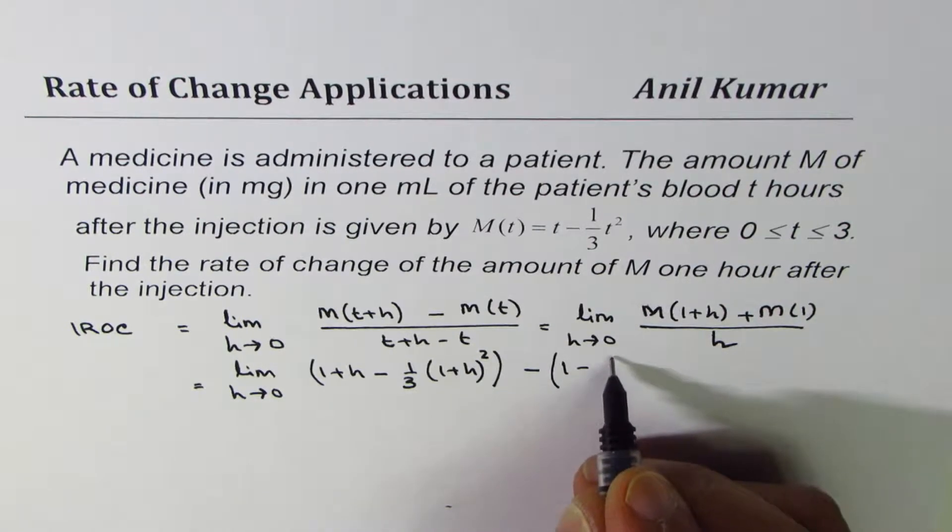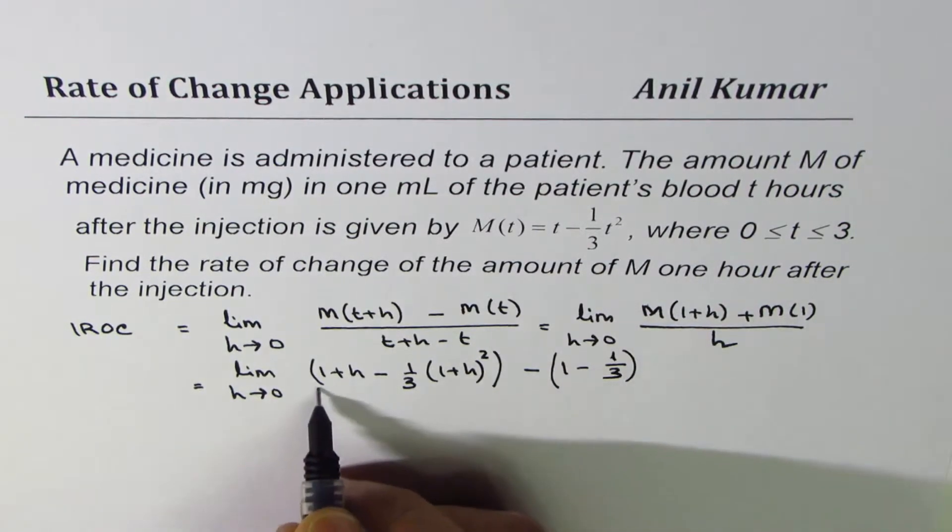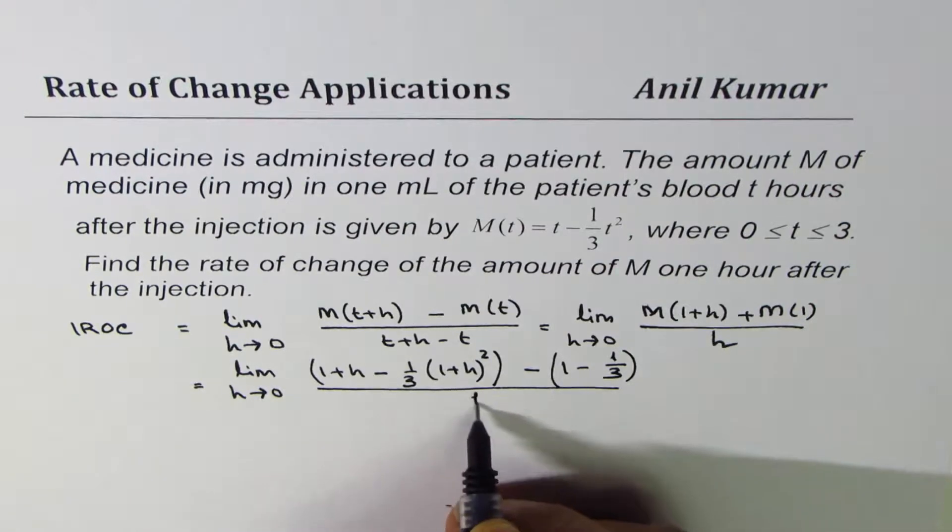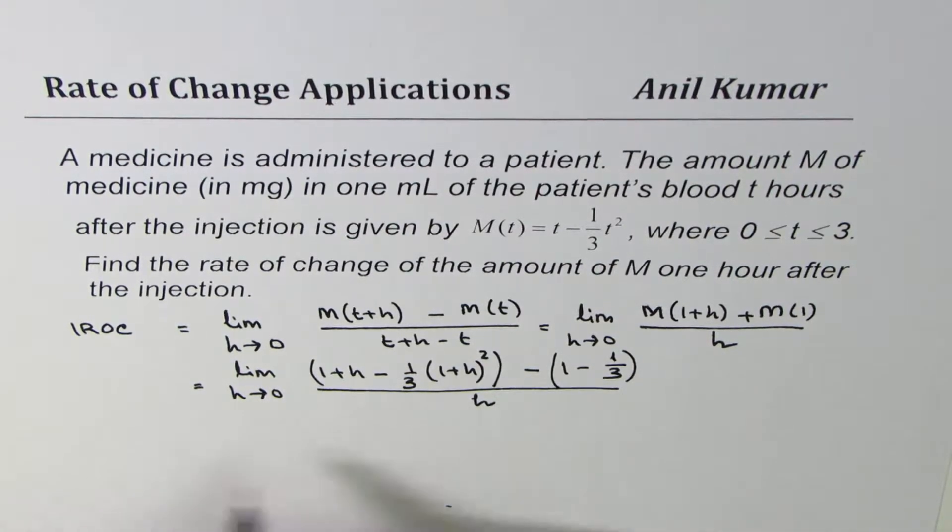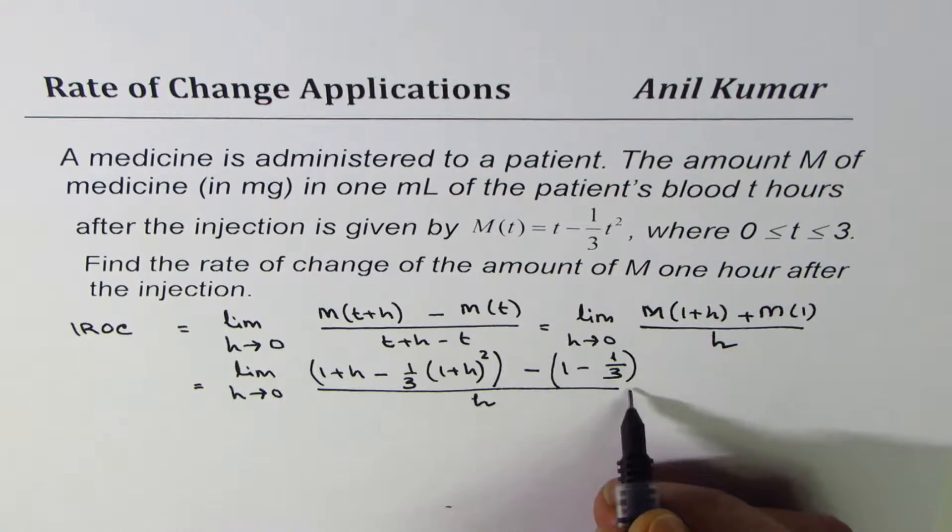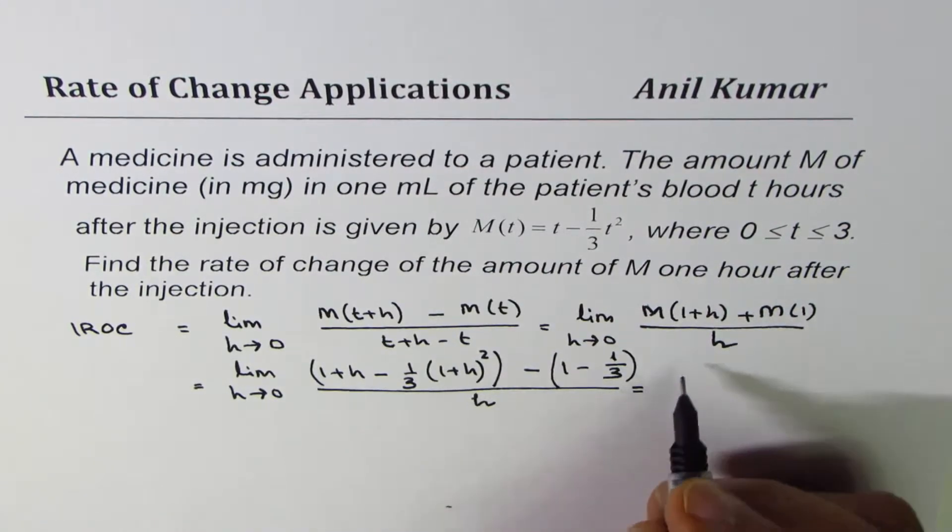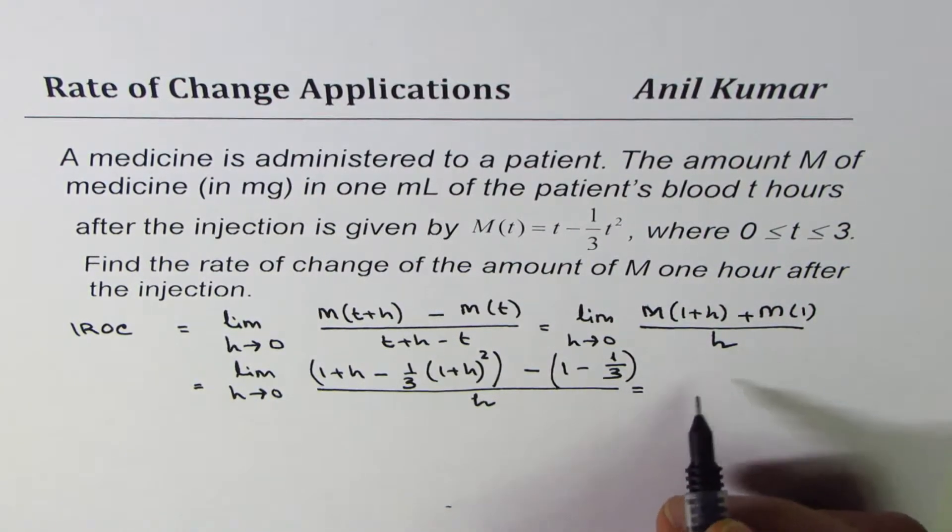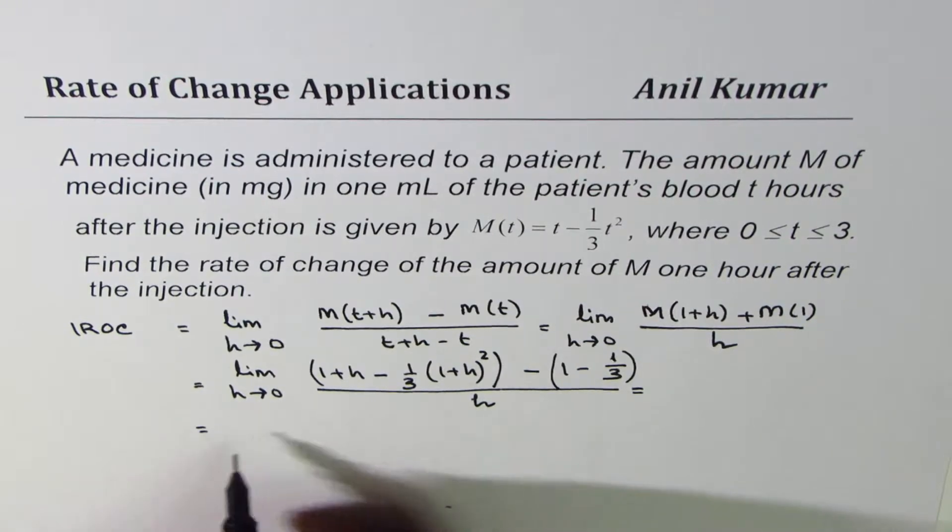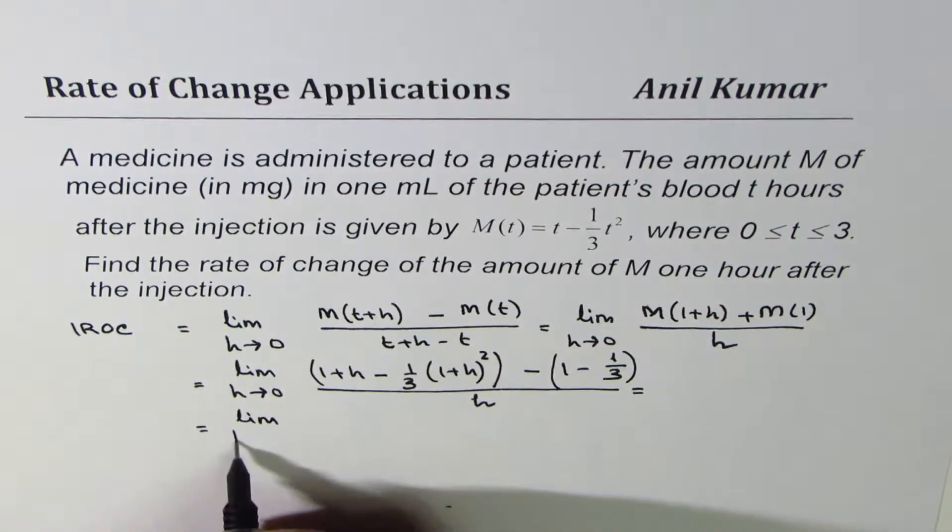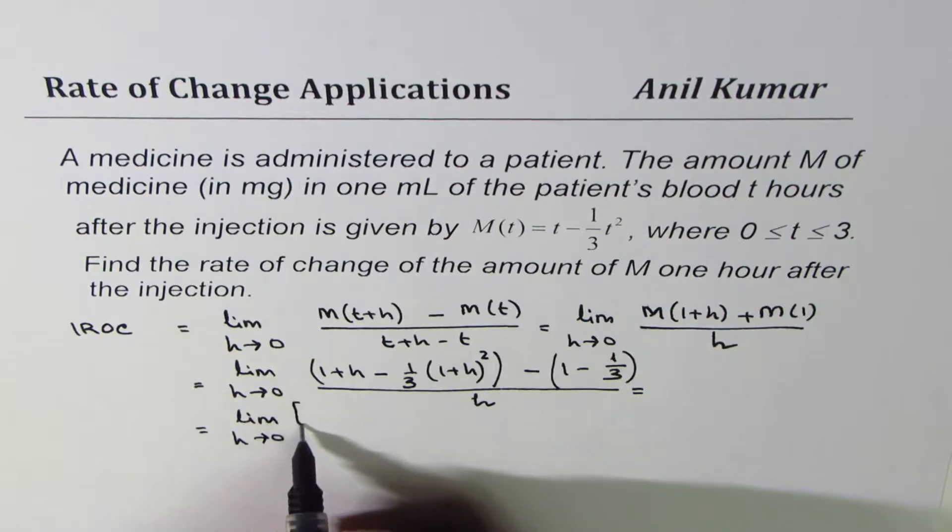Okay, minus M of 1. So let me replace this by 1, I get 1 - [1/3]. Let's put them in brackets, is it okay? And everything divided by h.